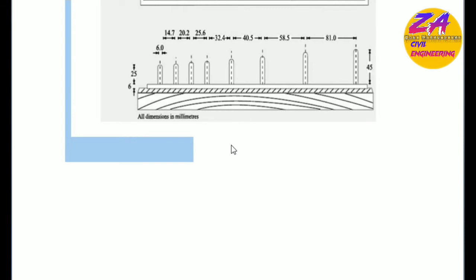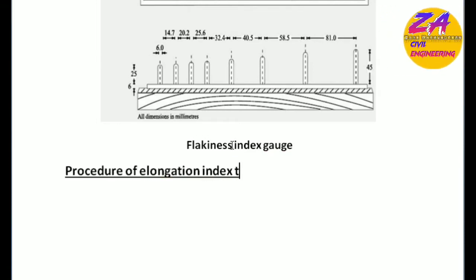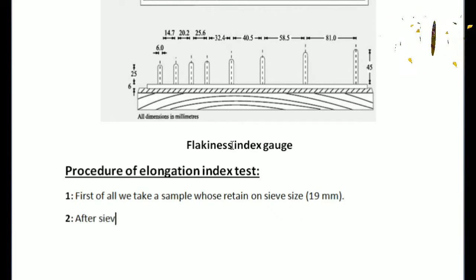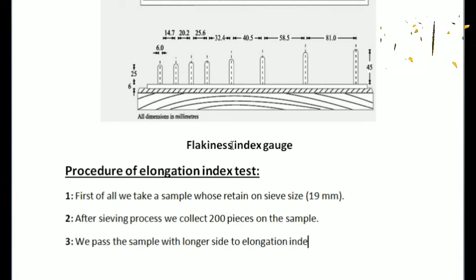And these are barriers. In this experiment we pass our particles through these barriers. If particles pass through these barriers, that is called flaky particles. So further we proceed to the elongation index test. First step: we take our samples that retain on sieve size 19 millimeters.